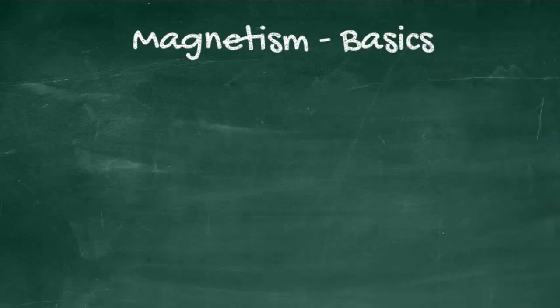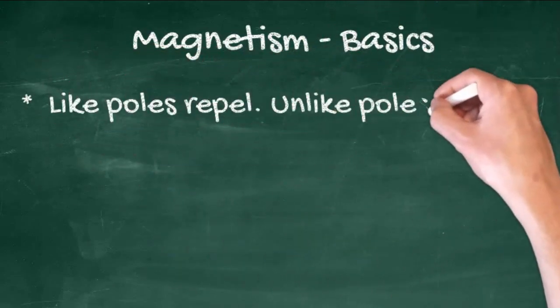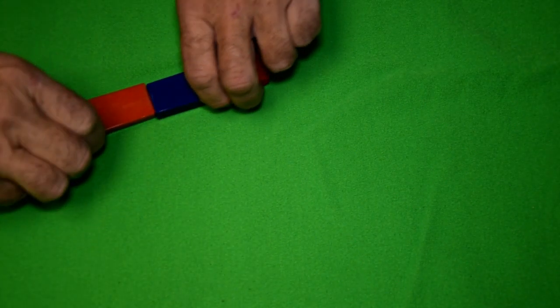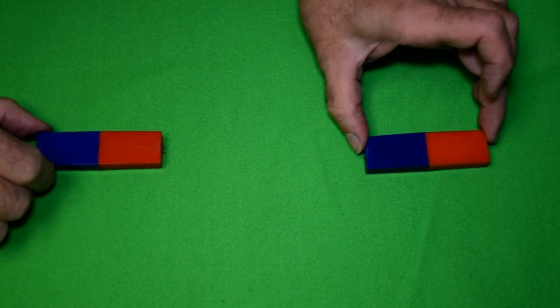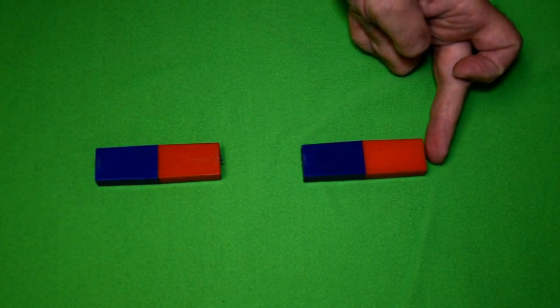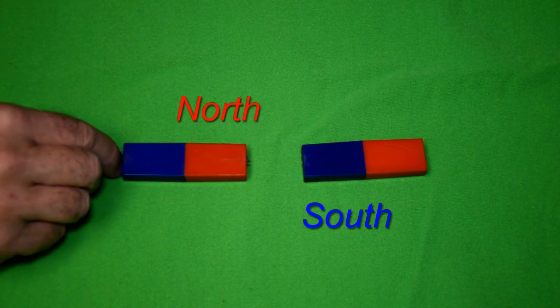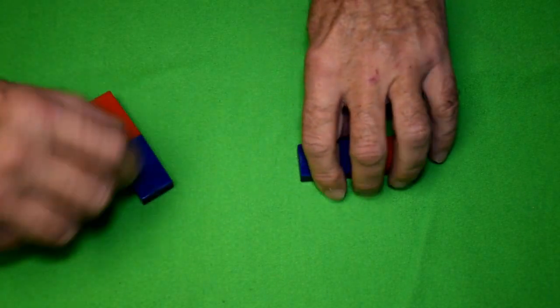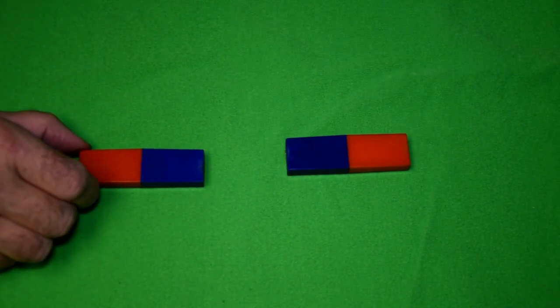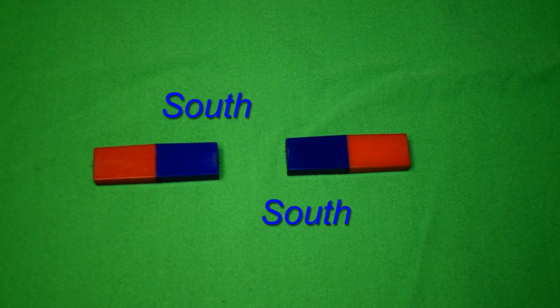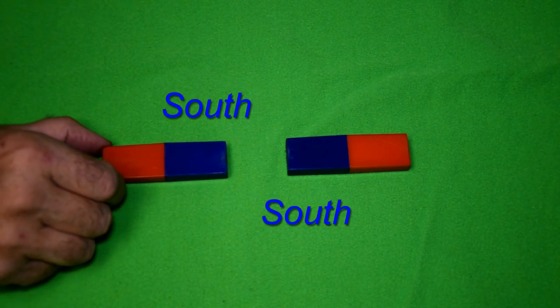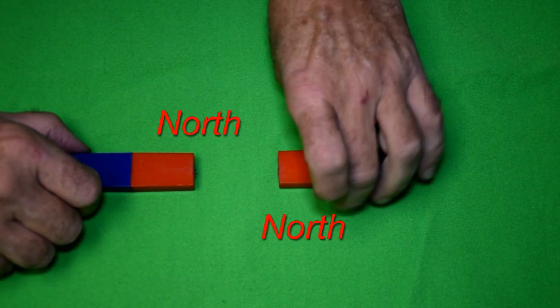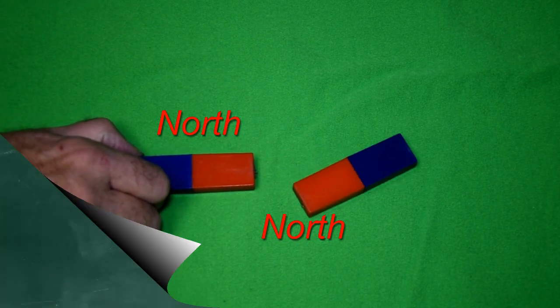Starting with the basics of magnetism. Like poles repel, unlike poles attract. A north and a south pole will attract each other. A south and a south pole will repel each other, and a north and a north will repel.